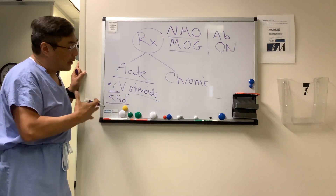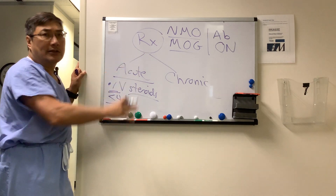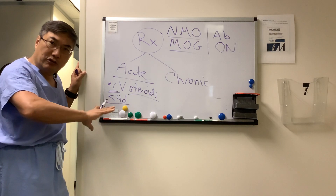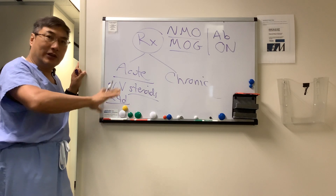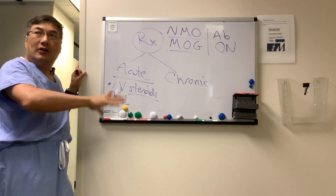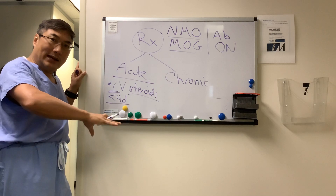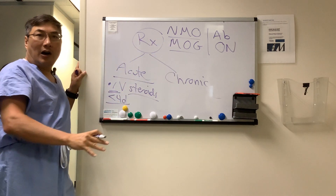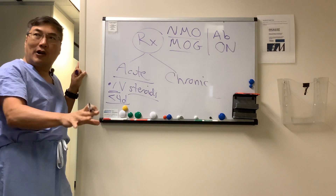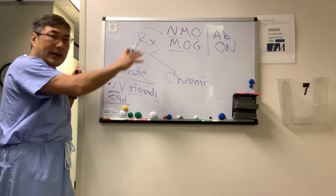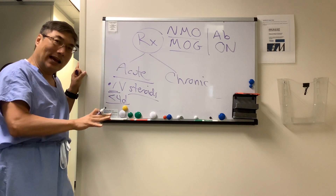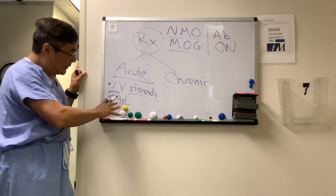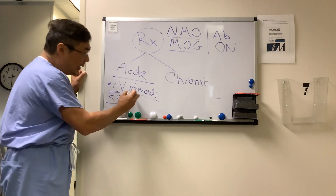It has been our practice to admit to the hospital all optic neuritis until we can sort through whether it's the good news — idiopathic — or the medium bad news — MS — or the bad news — MOG — or the super ugly — NMO. Because you can't tell that at time zero with optic neuritis, you probably should admit to the hospital.